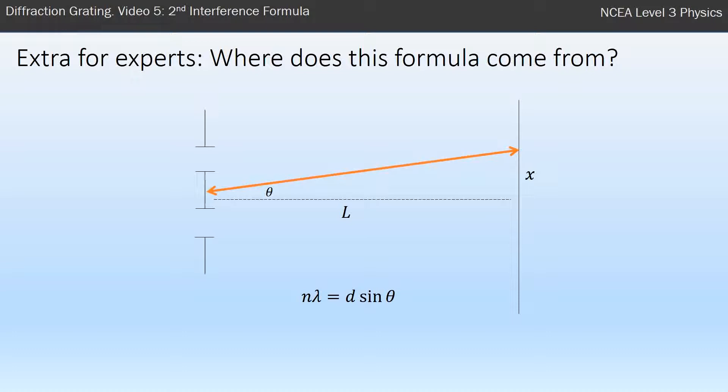If I've got a double slit there and I'm looking at a bright spot some distance x from the middle, and the slits in the screen are L distance apart, I can draw myself a little triangle there, where one side of the triangle is L, one side is x, and just like before, I used tan theta as my relationship between x and L.